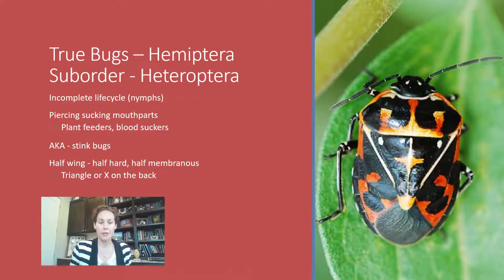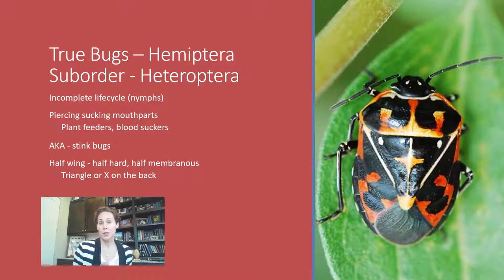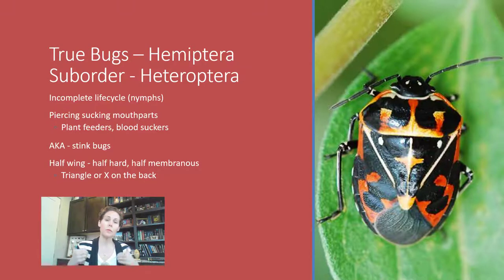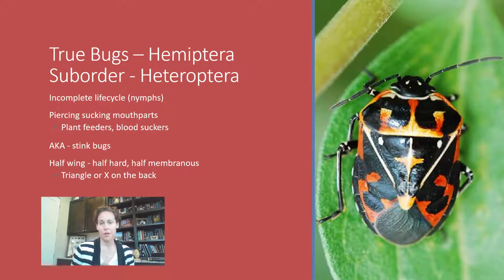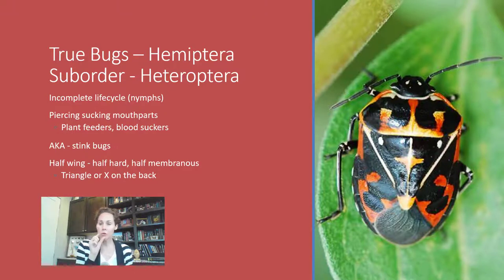Hemiptera has three different suborders and is so big and broad that it's important to break it down. All hemipterans share an incomplete life cycle — their babies are called nymphs. Every single one of them has piercing and sucking mouthparts. Imagine if instead of teeth you have a long straw as your mouthpart — they feed on liquid food, either plant liquid or blood sucked from their prey.